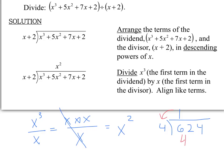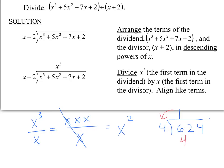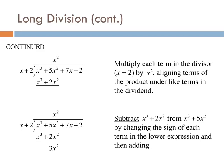Next, multiply that x squared by the entire divisor (x plus 2). x squared times x is x cubed — line it up under x cubed. x squared times 2 is 2x squared — line that up under the x squared term.